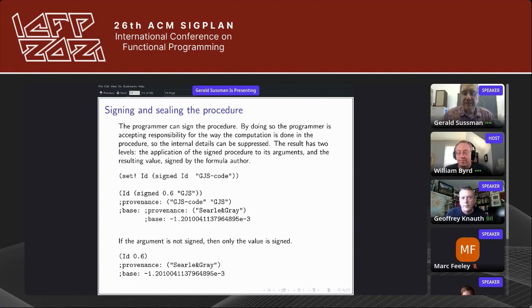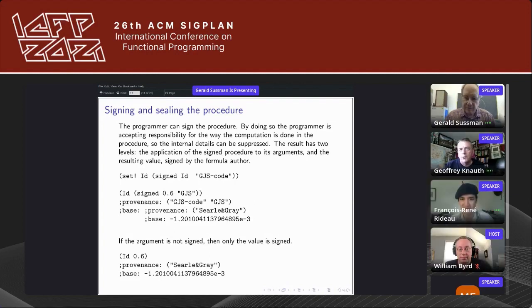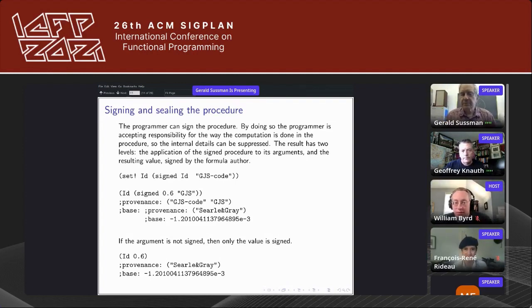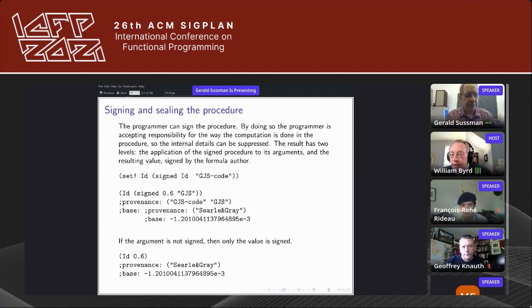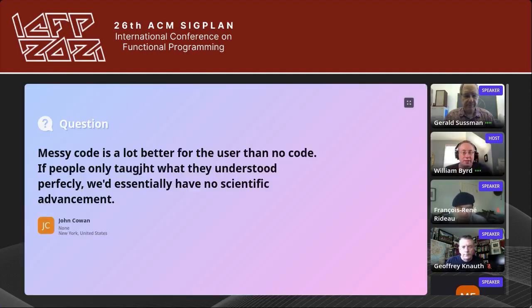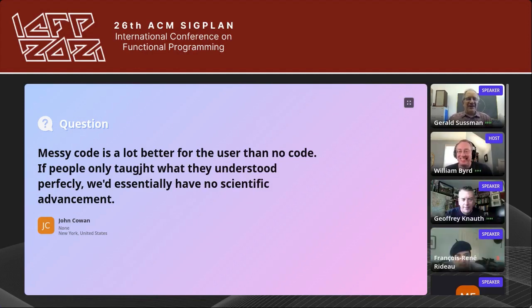Jerry do you remember Ken Anderson from 20 years ago? Anyway we had this thing called the data set manager and we would sign computations with MD5 hashes at the time. That's certainly a reasonable thing to do for a big data set. I see a comment from John Cowan - messy code is a lot better for the user than no code. If people only taught what they understood perfectly, we'd essentially have no scientific advancement. He's grumbling at me. I agree with you. But remember everything I've ever written is free Libre software. And when it appears online, which it does quite often, it is there for you to play with. I'm not trying to hide this stuff. I'm just not happy with this one yet. Give me a couple more weeks.